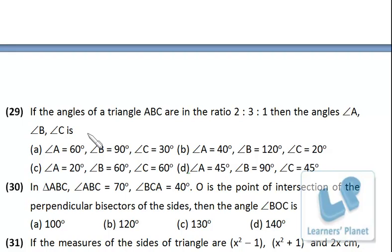If the angles of triangles ABC are in the ratio 2 is to 3 is to 1, then the angles ABC are, very simple. 3 and 2, 5 and 1, 6. So 180 divided by 6. So 1 is 30.